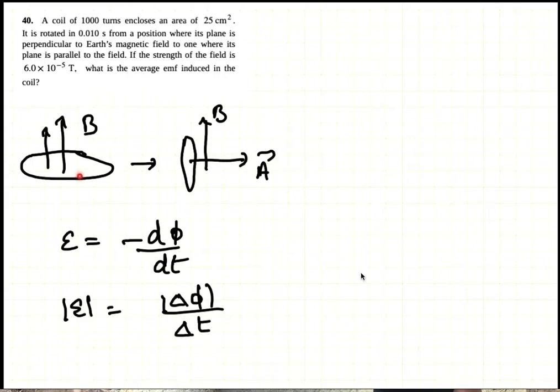And when the coil turns from here to there, the flux has gone from NBA to zero.